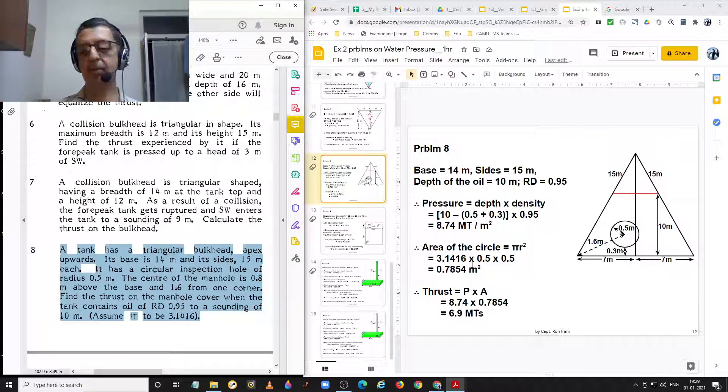We have to find the thrust on the manhole cover. Now, as I told you before we did problem number 1 in this exercise, that when you have a circle, the pressure and the thrust has to be calculated for its center. We know the radius is 0.5 and its height from the base of the triangle is 0.8. Therefore, the depth of the center of the circle from the surface of the liquid is how much? 10 minus 0.8. That is equal to 9.2 meters. That means from this point where my mouse is located till the red line is 9.2 meters.